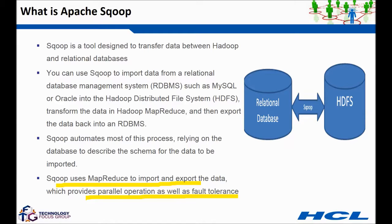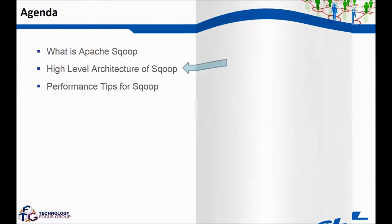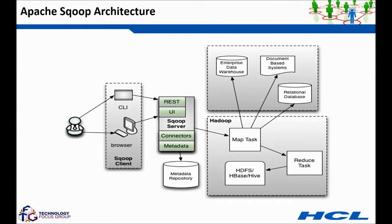When you run a Sqoop command, it will internally launch MapReduce jobs on top of the Hadoop cluster, using the infrastructure you have set up. You simply run very simple Sqoop commands and internally it automatically creates MapReduce jobs for you. You can use either command-line interfaces or browser-based clients from third parties, which connect to the Sqoop server.